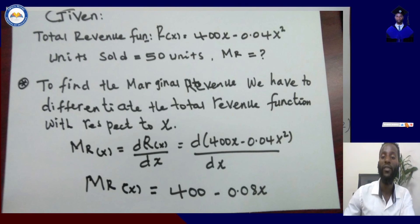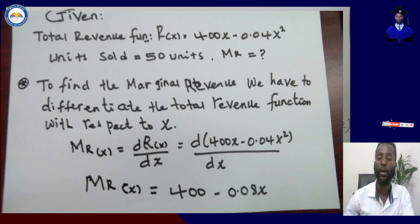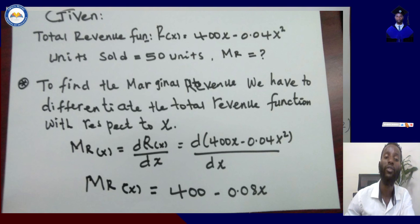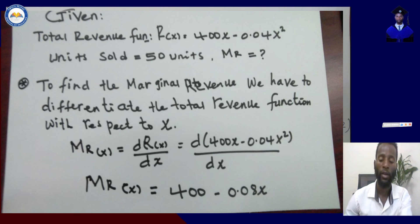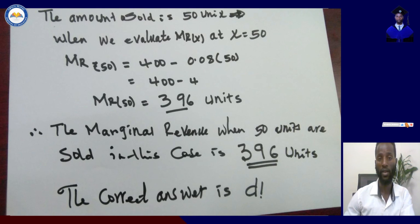We differentiate the total revenue function with respect to x to find the marginal revenue. The marginal revenue function is the derivative of r(x) with respect to x: d(400x minus 0.04x squared)/dx. When we differentiate, we get 400 minus 2 times 0.04, which is 0.08x. So the marginal revenue equation is MR(x) equals 400 minus 0.08x.